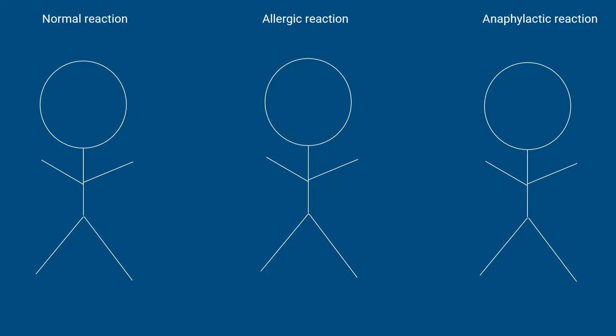During an allergic reaction, you'll typically see hives, itchiness, shortness of breath, or a reddish skin color. We can treat these patients with antihistamines like Benadryl to help reduce the body's response. An allergic reaction is generally considered minor — the patient complains of itchiness and has hives — and normally can be treated with Benadryl.